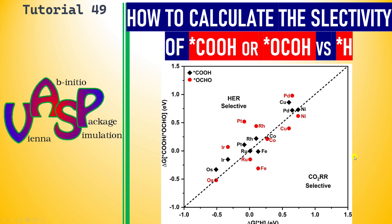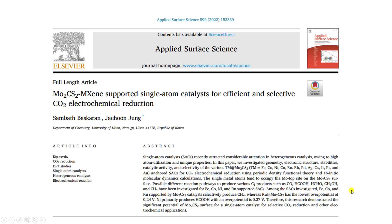You have to plot this kind of figure and then calculate the selectivity of the catalyst. Some catalysts may be HER selective and some may be CO2RR selective. You have to calculate this first before going to the full catalytic mechanistic pathway of CO2 reduction reactions. I will tell you how to calculate and how to plot this kind of profile.